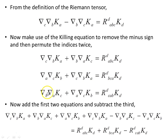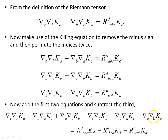We swap c and a to give us c, and the minus sign changes to a plus. Here's our first object, and then we permute the indices twice to give us two more expressions. Then we add the first two equations and subtract the third. On both sides, first two equations minus the third — notice this term cancels with this term, and this term cancels with that one, leaving two terms.